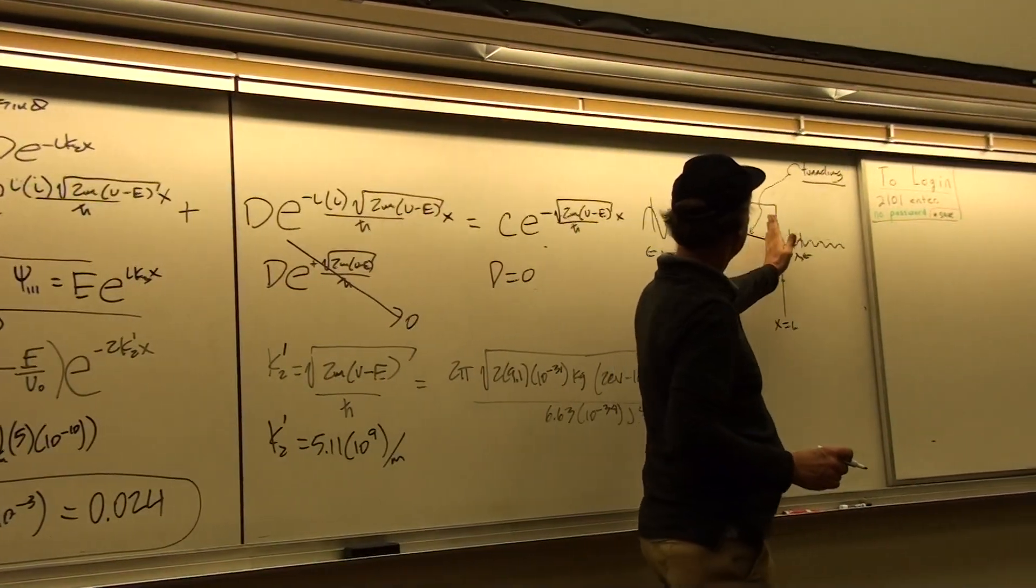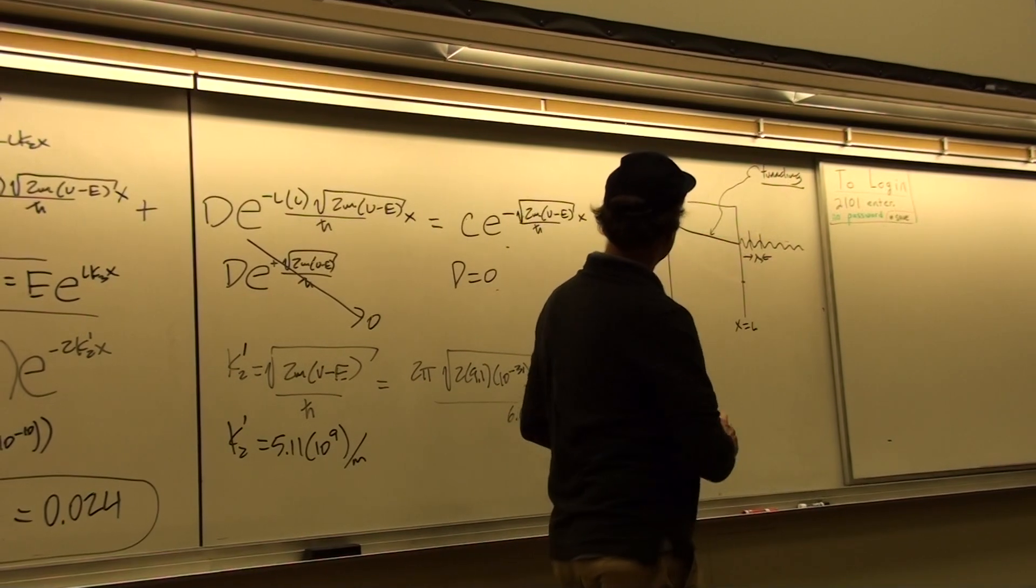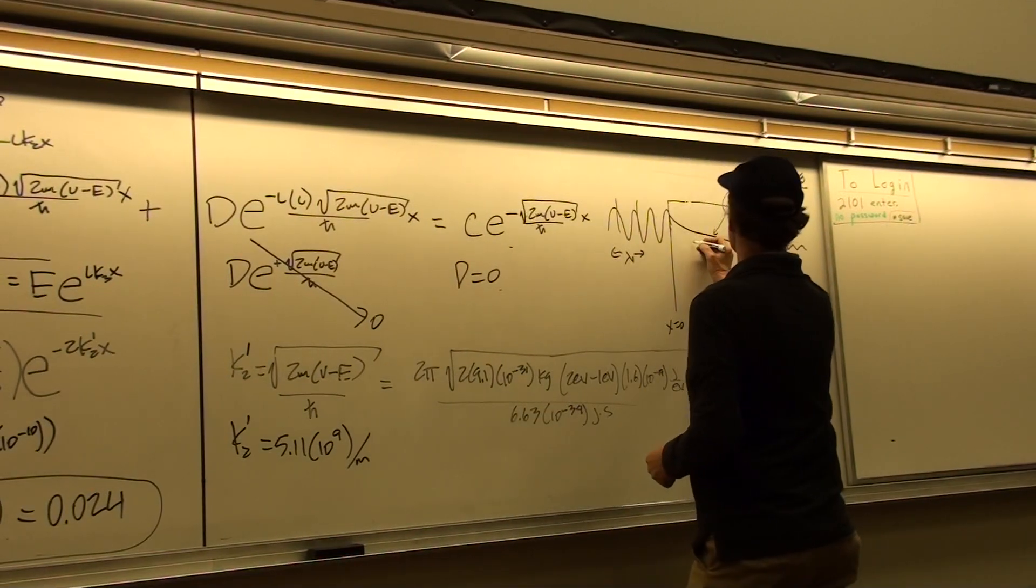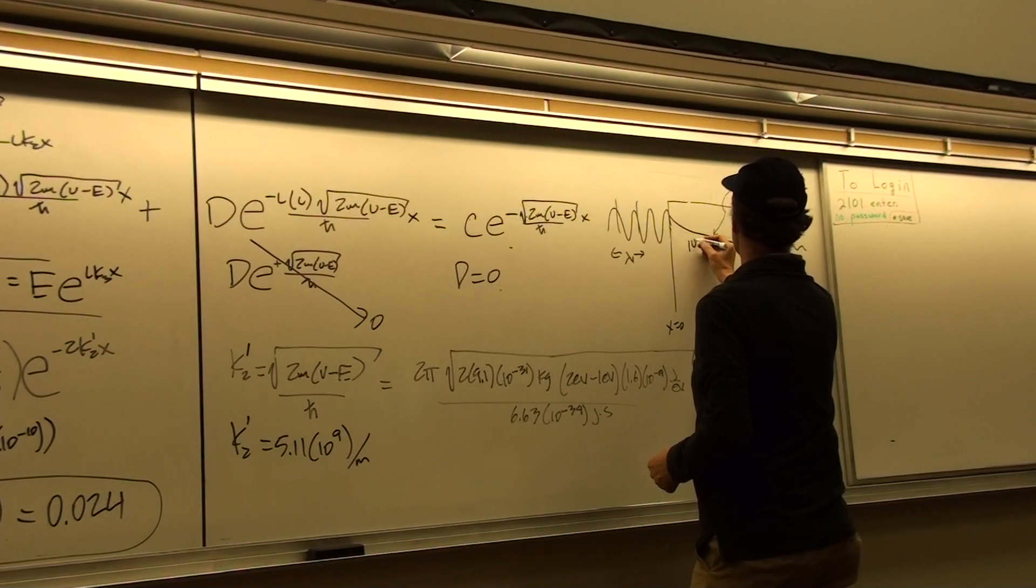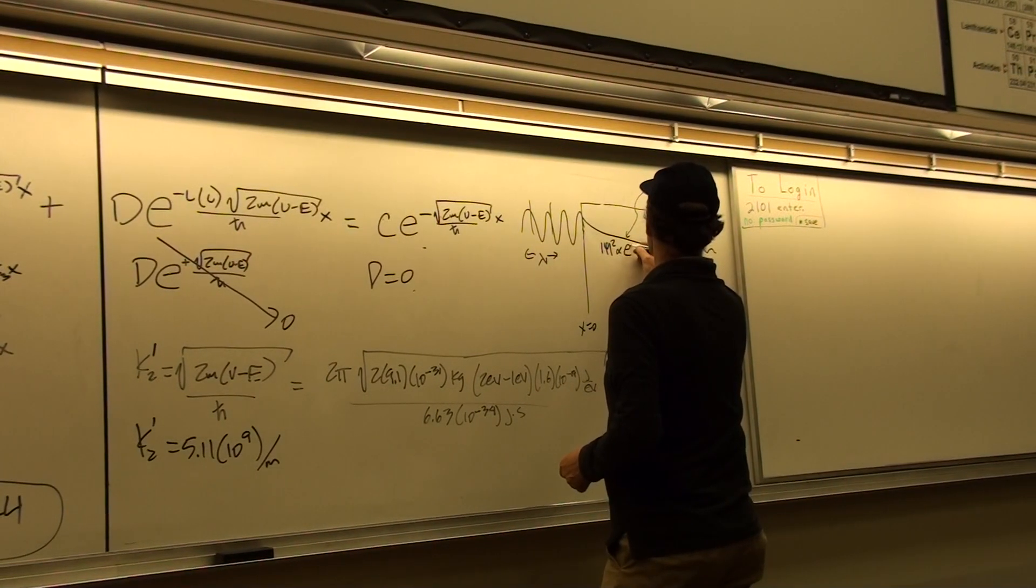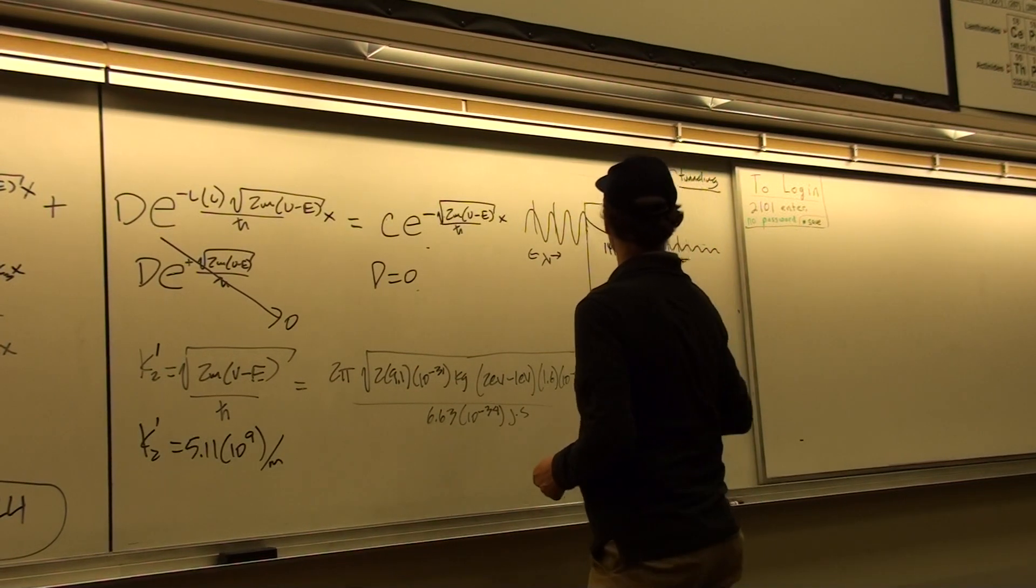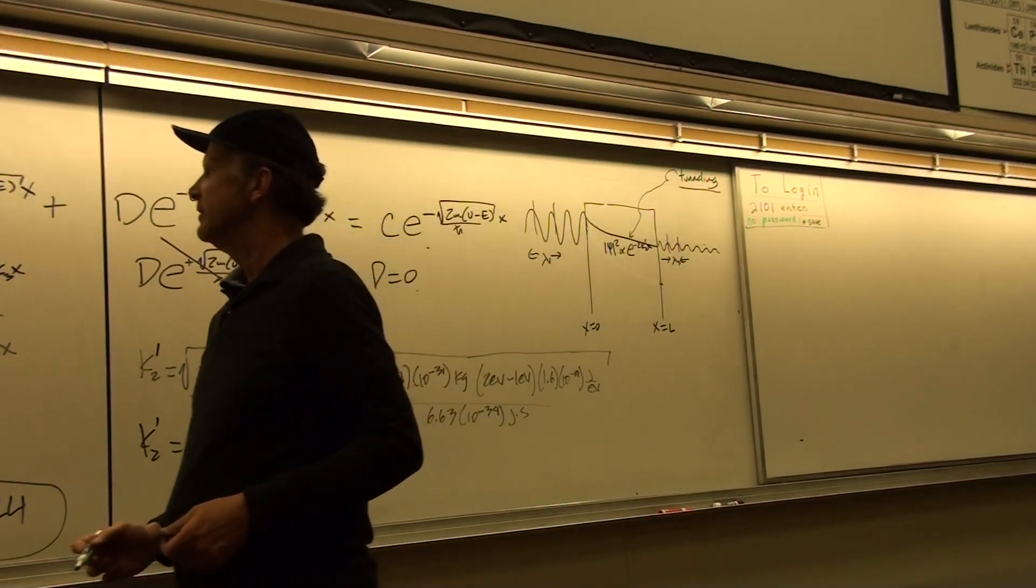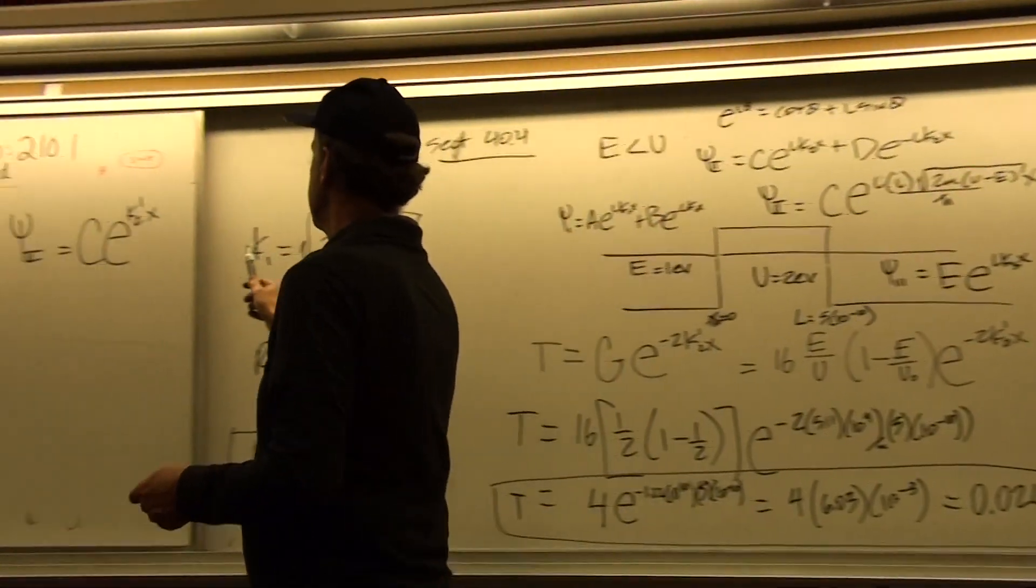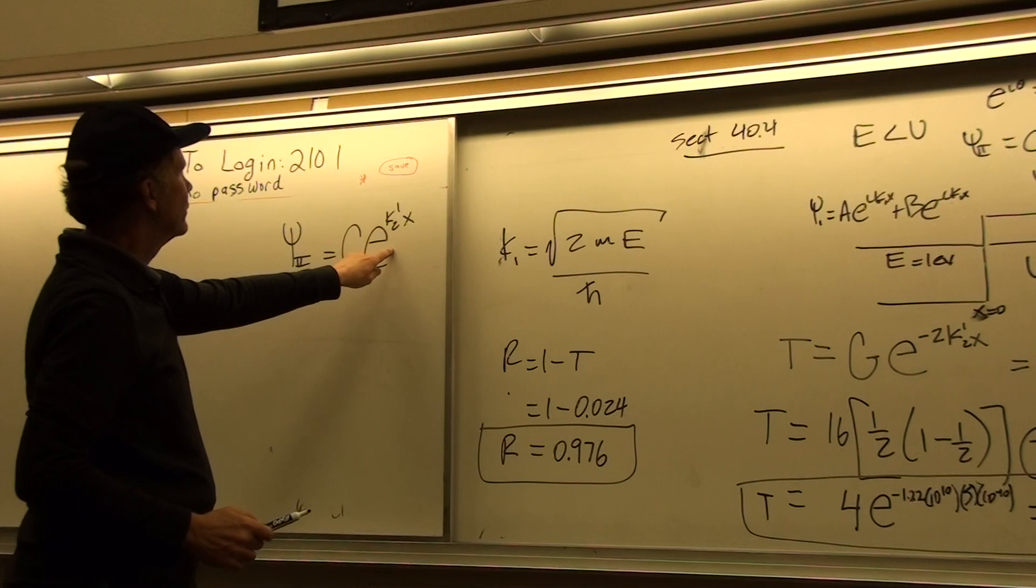which is what we sometimes call our classically forbidden region in which tunneling could take place. So in this region then the probability squared is proportional to e to the minus 2 k2 prime x because the expression for the psi goes like e to the k2 prime times x.